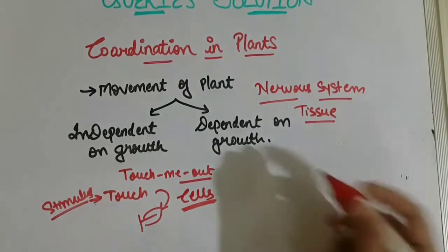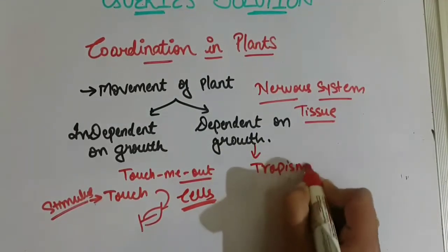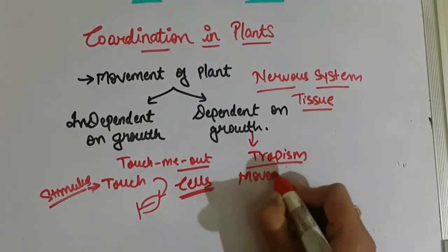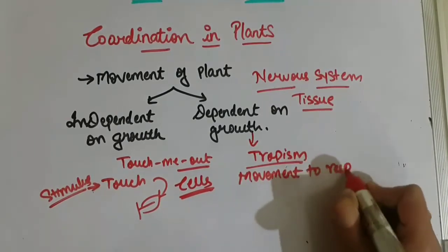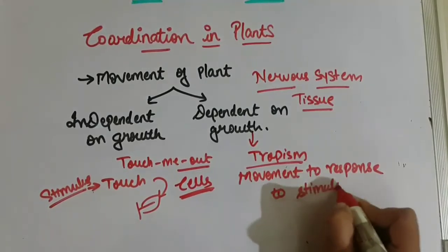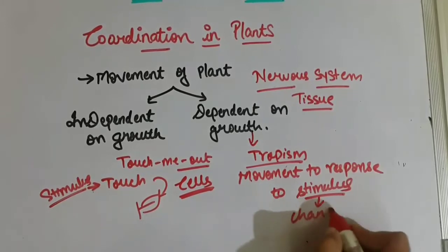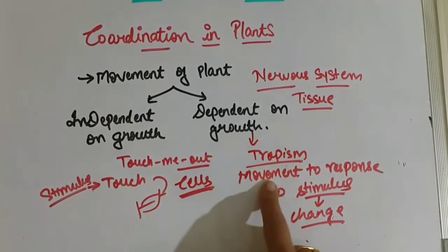Now let us see how movement through dependency on growth is obtained. Here we will talk about tropism. Tropism means movement of a plant in response to a stimulus. A stimulus means any change — it can be a physical change, a chemical change, or any change. Let us study tropism in more detail.